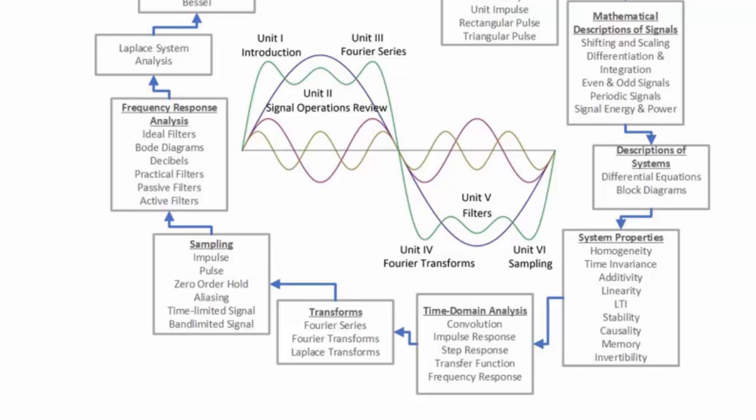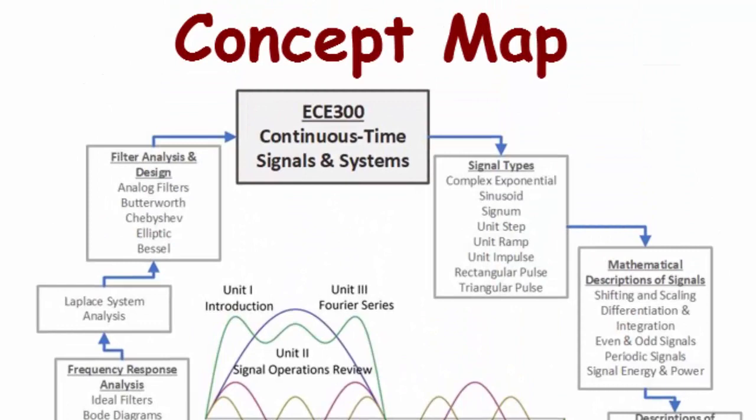You also did frequency response in AC circuits. Then we're going to look at transforms such as Fourier series and Fourier transforms. You did Laplace transforms in circuits and systems, and you actually did some Fourier transforms in AC circuits — you called it phasor analysis. For sampling, we'll look at impulse, pulse, and zero-order hold, as well as first-order hold, aliasing, time, and band-limited signals. For frequency response analysis, we'll look at ideal and practical filters, block diagrams, decibels, and passive and active filters. Filter analysis and design covers practical analog filters such as Butterworth, Chebyshev, Elliptic, and Bessel.